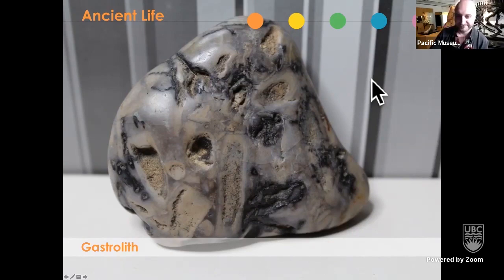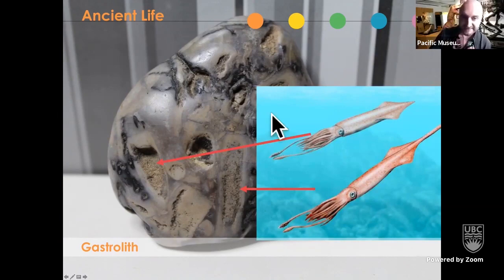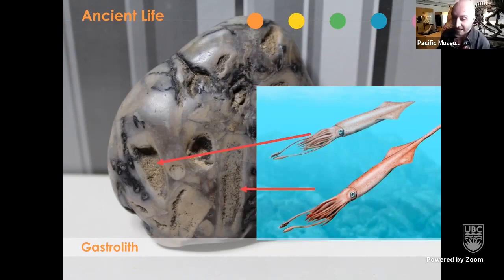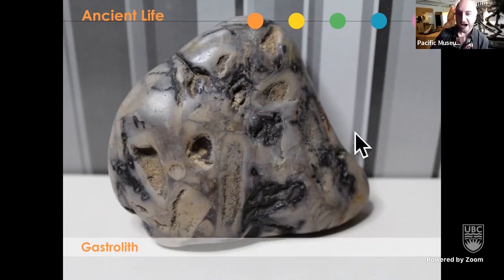This specimen is extra special because you can see oval marks on it — those are actually other fossils called belemnites. Hundreds of millions of years earlier, the area where this rock formed was an ancient seabed. Those belemnites swam around, died, were fossilized, and captured in this rock. Millions of years later the sea dried up, a dinosaur came along, ate it, and turned it into a gastrolith. This one specimen tells two stories — of the belemnites and of the dinosaur.